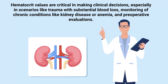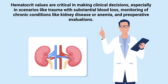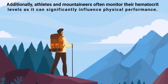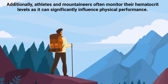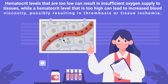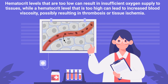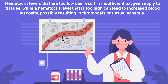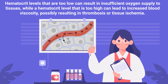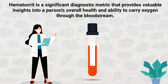Hematocrit values are critical in making clinical decisions, especially in scenarios like trauma with substantial blood loss, monitoring of chronic conditions like kidney disease and anemia, and preoperative evaluations. Additionally, athletes and mountaineers often monitor their hematocrit levels as it can significantly influence physical performance. Hematocrit levels that are too low can result in insufficient oxygen supply to tissues, while levels that are too high can lead to increased blood viscosity, possibly resulting in thrombosis or tissue ischemia.